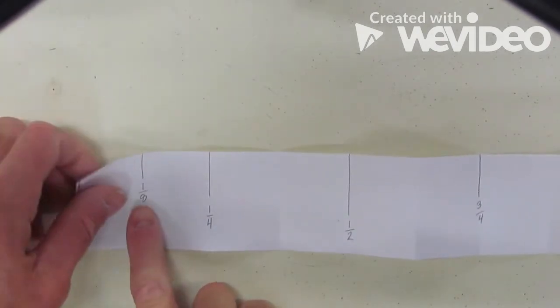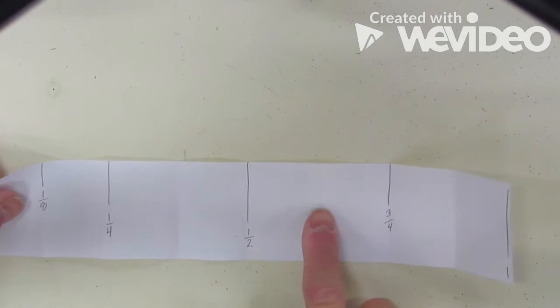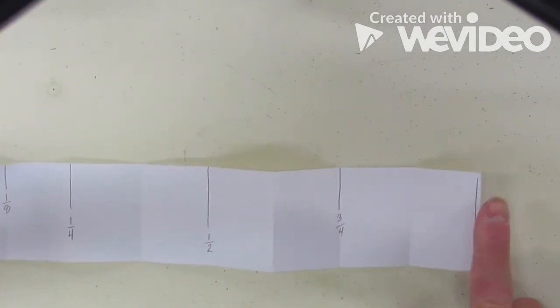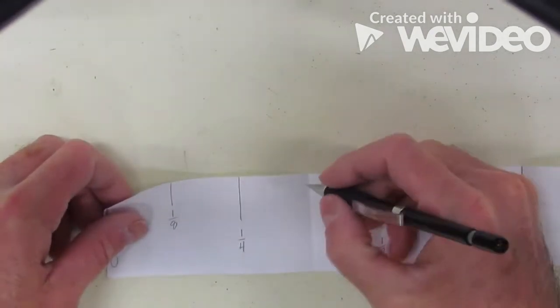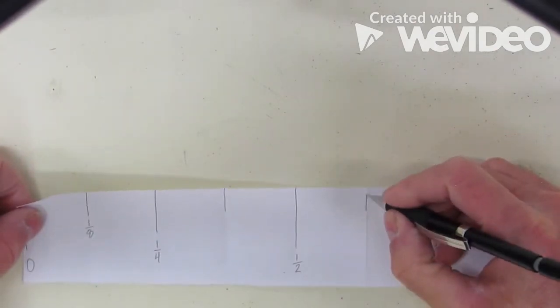1, 2, 3, 4, 5, 6, 7, 8. Yes, there are. So let's go down through here and let's label all of our eighths.